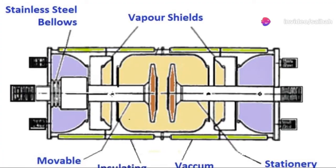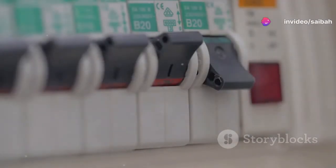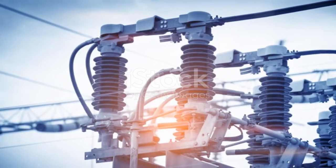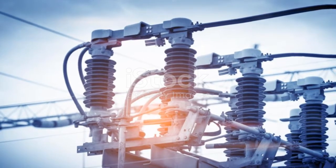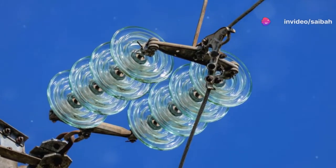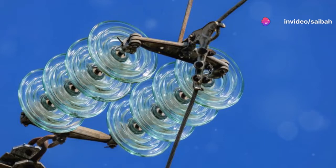So what exactly is a vacuum circuit breaker? Well, unlike other types of breakers that might use gases or oils to quench an electrical arc, VCBs use a high vacuum. This vacuum is an excellent dielectric medium, which means it's really effective at extinguishing arcs that occur when switching current paths in electrical systems.